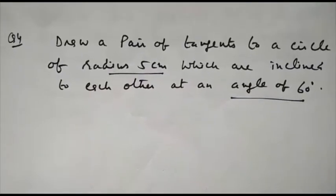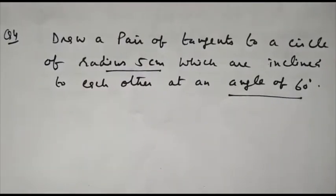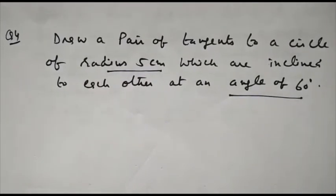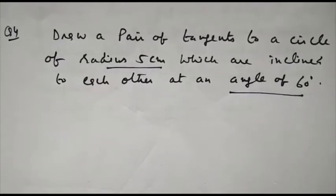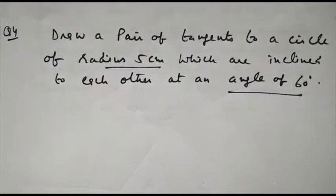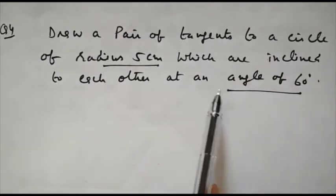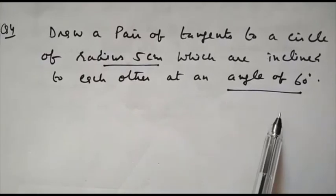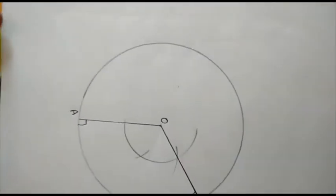Now question number 4. This is some different question. Draw a pair of tangents to a circle of radius 5 cm which are inclined to each other at an angle of 60 degrees. Now radius of the circle is 5 and angle between the two tangents is 60.